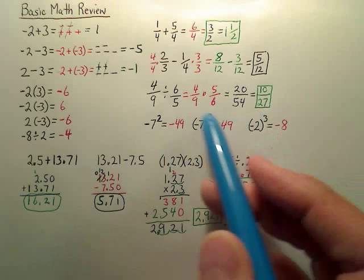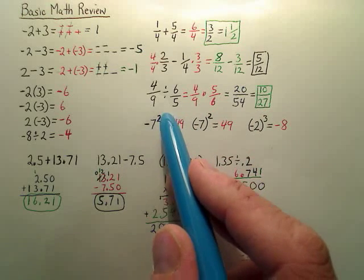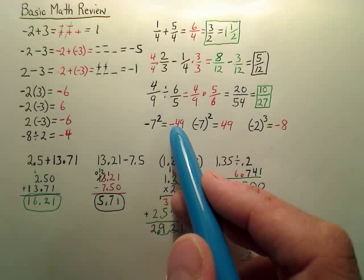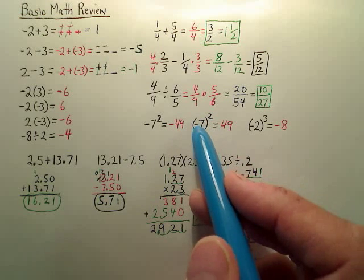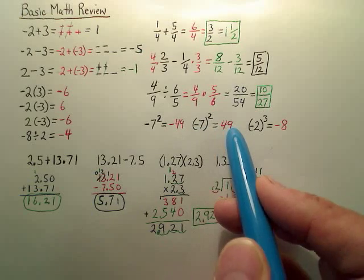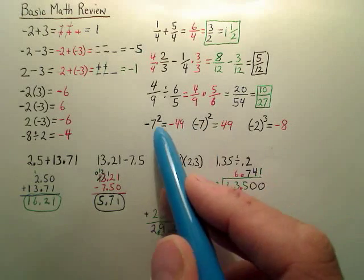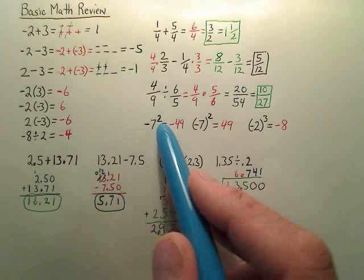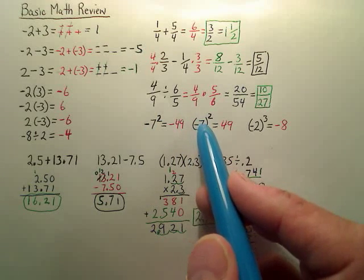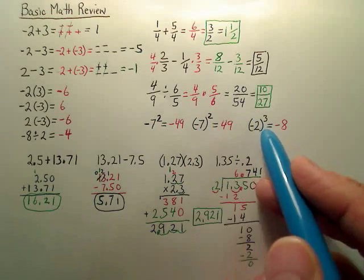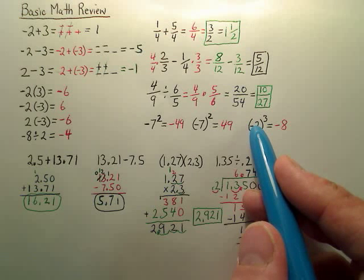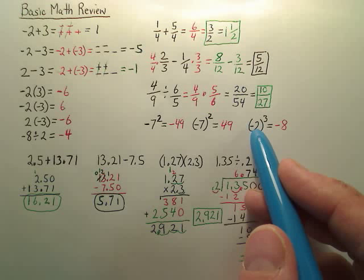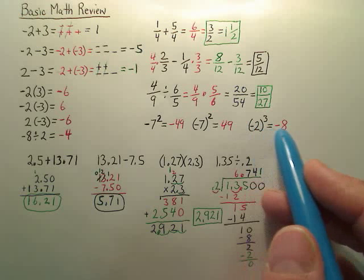You have to be okay with exponents. Understand that negative 7 squared means the negative sign is applied after you square, giving negative 49. But negative 7 in parentheses squared means you're squaring negative 7 — that's negative 7 times negative 7, which is positive 49. That's a very common mistake. Similarly, cubing a negative 2 means you multiply it by itself three times, which gives negative 8.